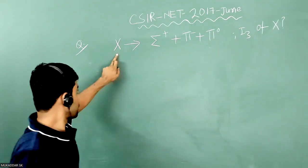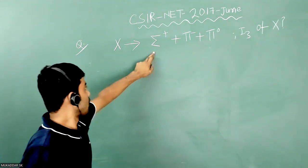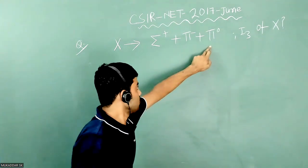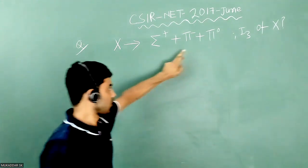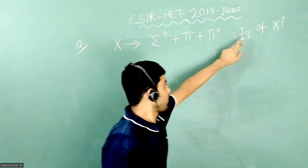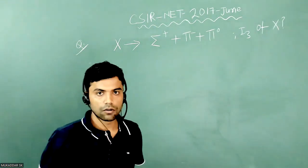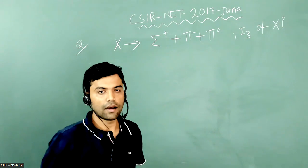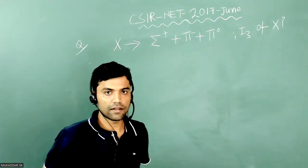In that question, X decays to sigma plus plus pi minus plus pi zero by strong interaction. Then what is the i3 of X particle? For strong interaction, i3 is conserved, so we'll apply that law and find the i3 of X particle.